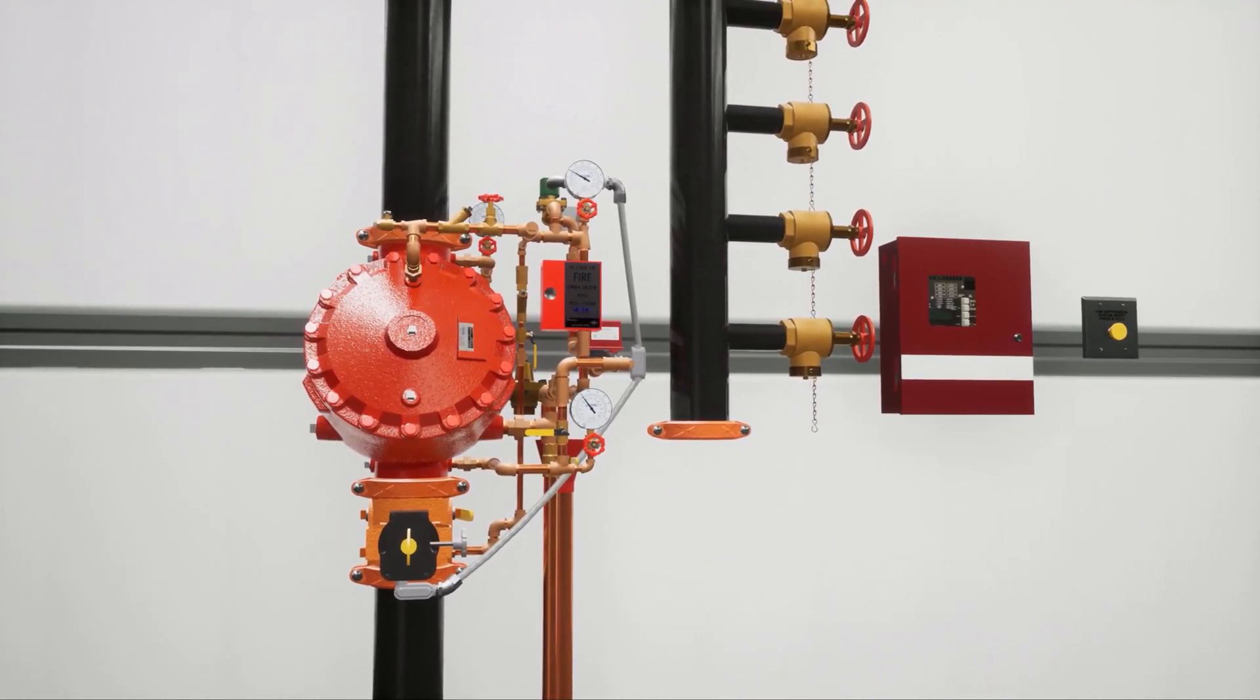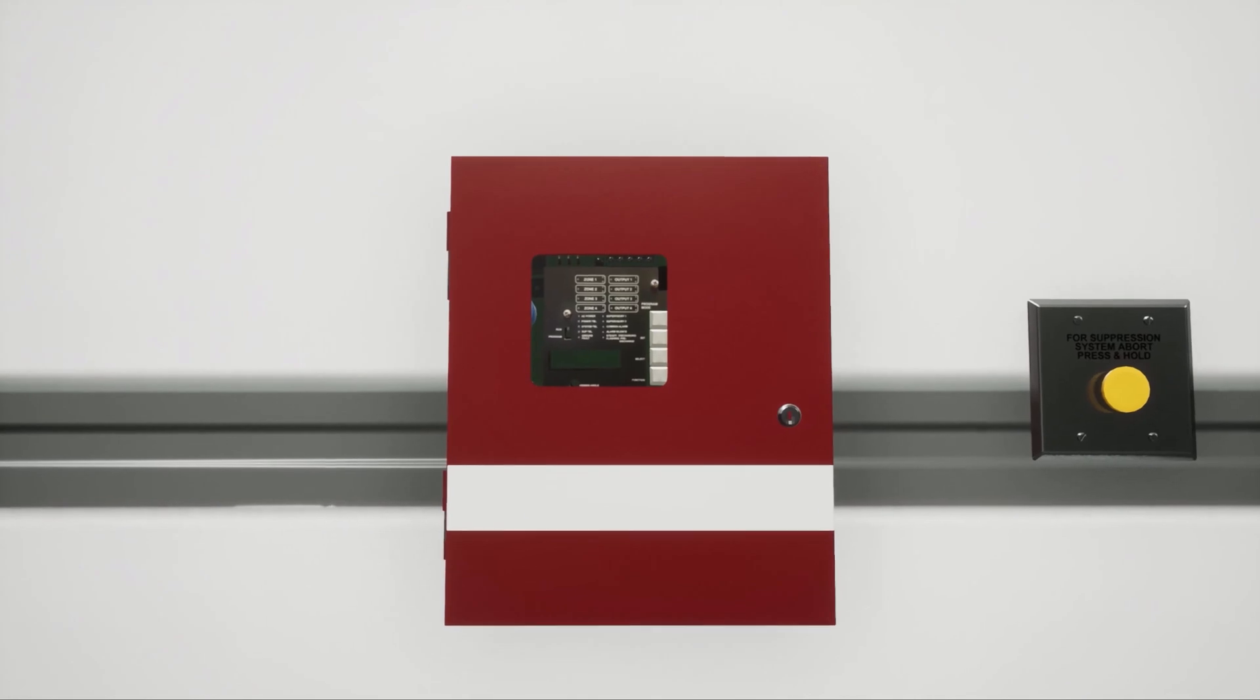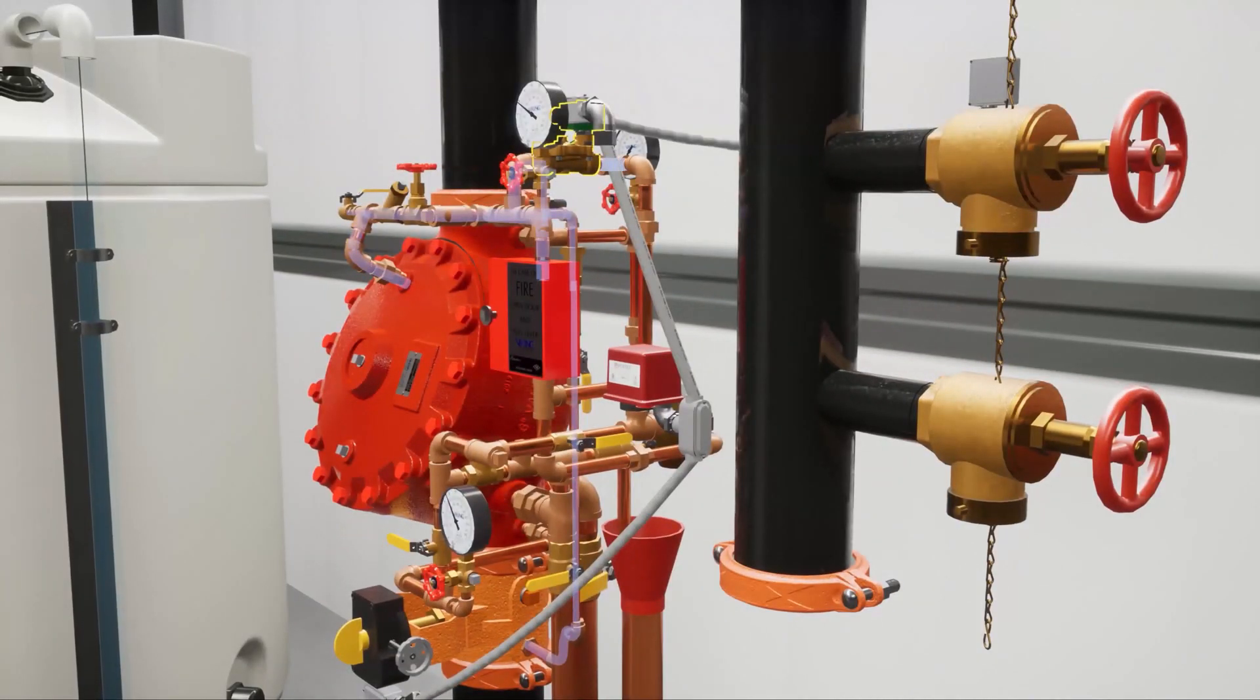The detection devices used are triple infrared detectors in a cross-zone configuration. In a scenario where a fire has started in the hangar and begins to grow, the electronic detection devices activate and send a signal to a release control panel. The electric solenoid valve is powered open.